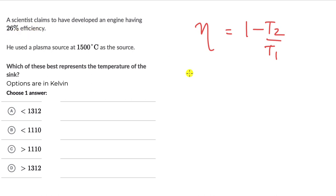This efficiency, 26%, it is less than the efficiency of a Carnot engine or the ideal engine. So when we write it in this manner, it becomes 1 minus T2 by T1. We already know what T1 is, this is 1500 degree Celsius, but we need to change it to kelvins.